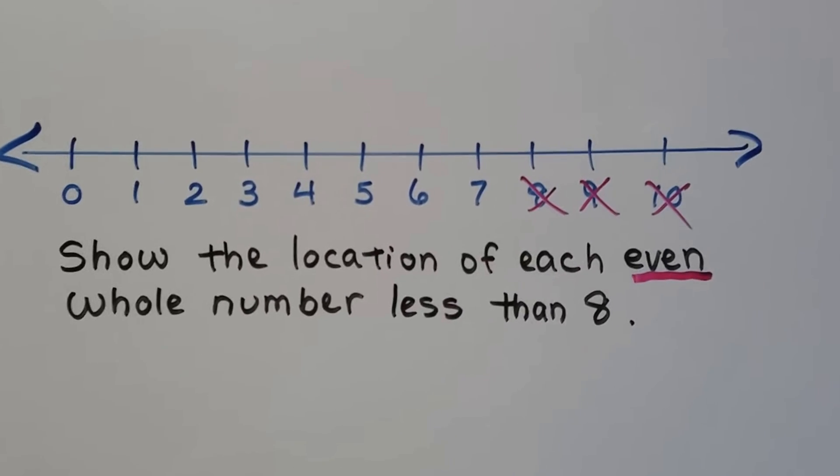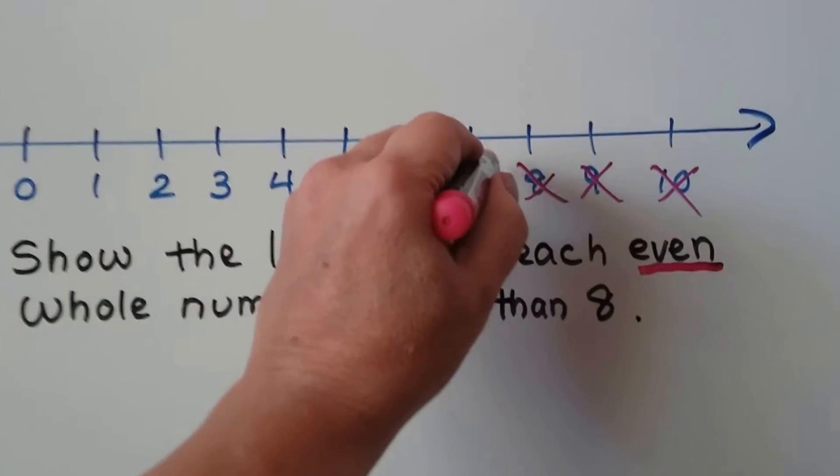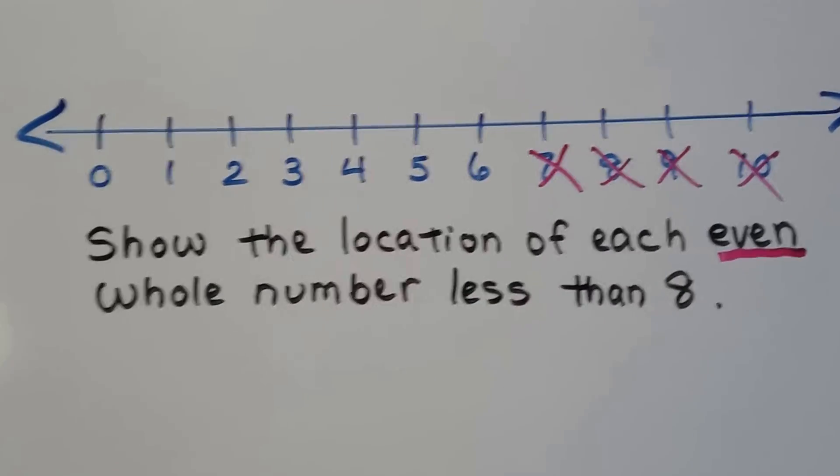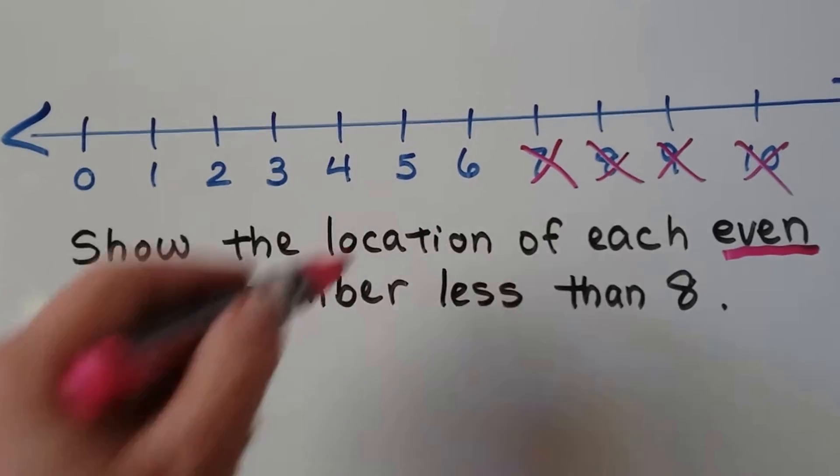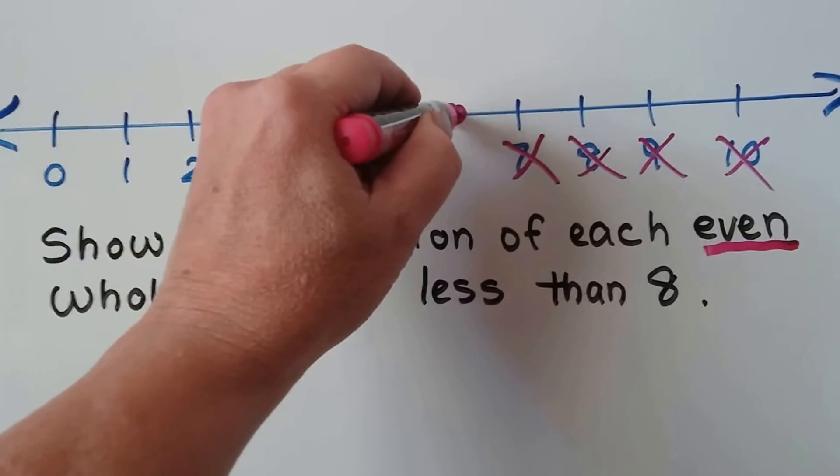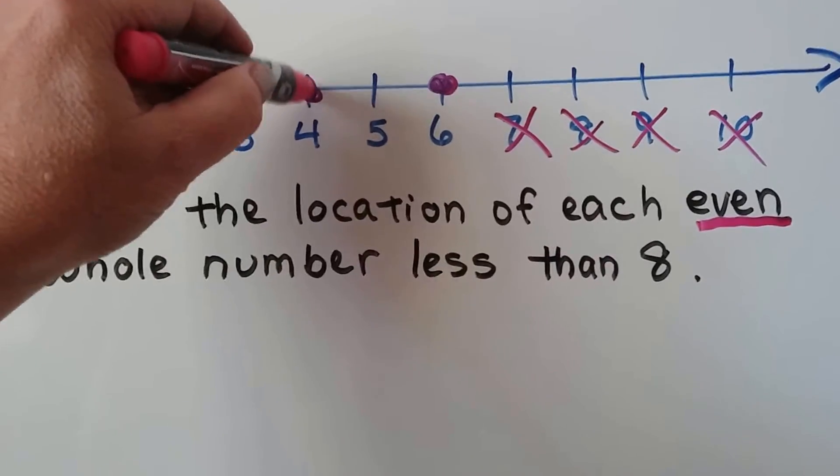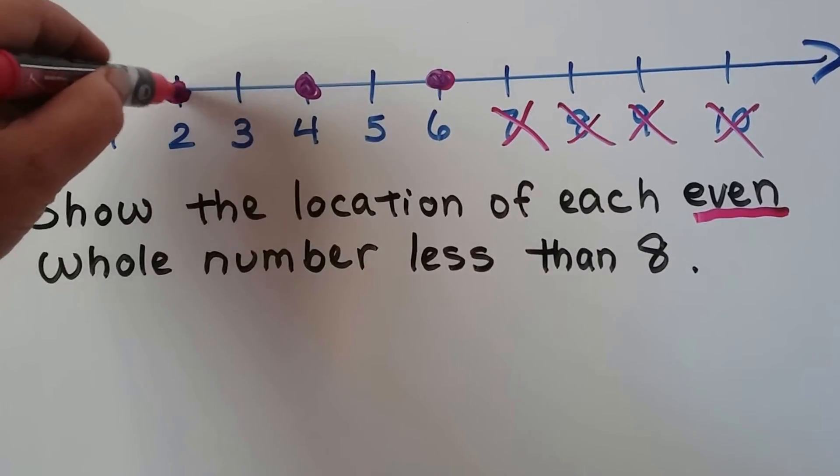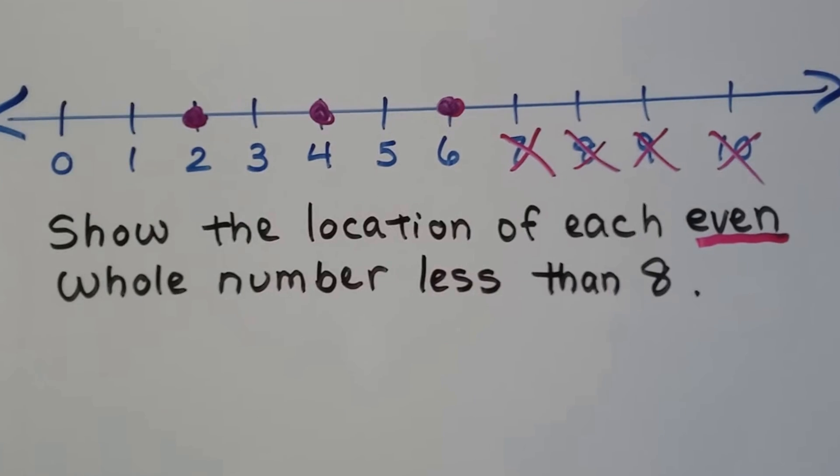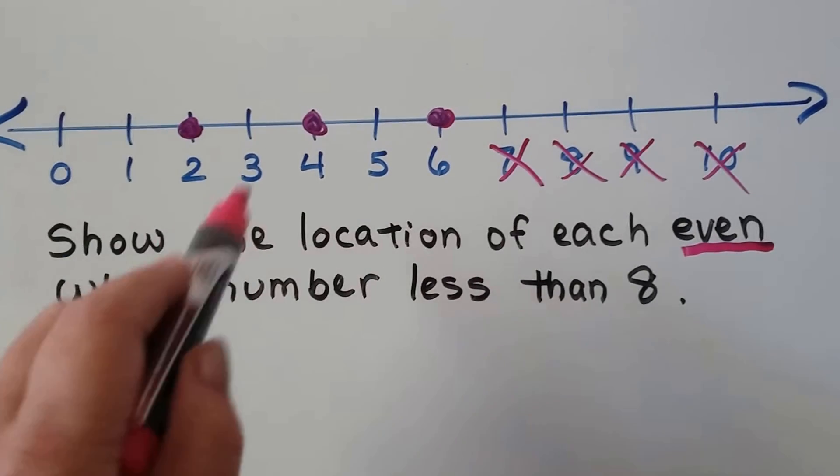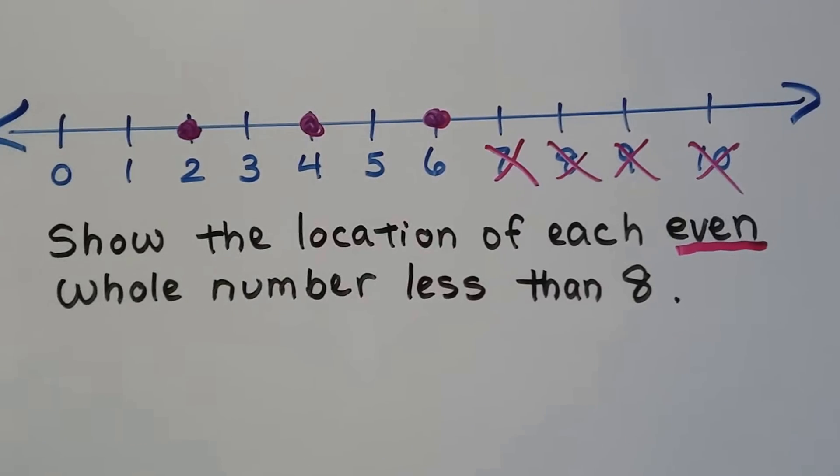Is 7 an even number? No. So it's not the 7 either. So we need to find the even numbers. Well, 6, that's an even number, and it's less than an 8. 4 is an even number. 2 is an even number. So we have 2, 4, and 6 because the 1, 3, and 5 are odd numbers, aren't they?